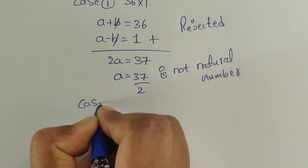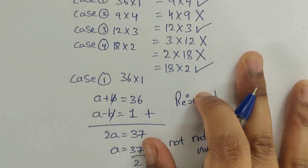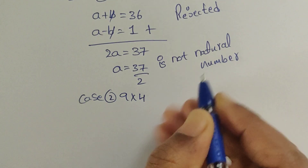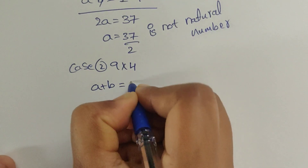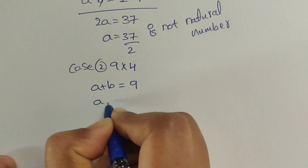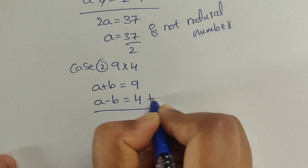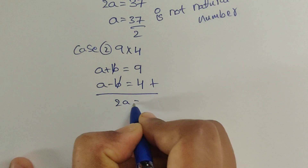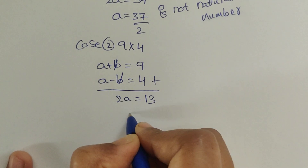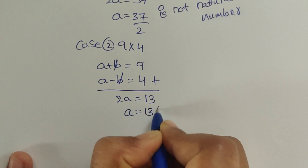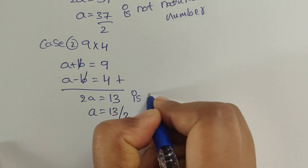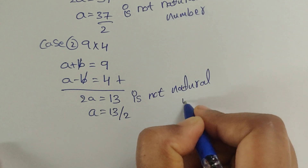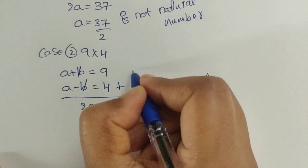Case 2: 9×4, so a plus b equals 9 and a minus b equals 4. Adding these two equations, the b terms cancel, giving 2a equals 13, so a equals 13 divided by 2. This is also not a natural number, so Case 2 is rejected.